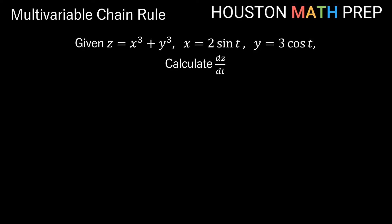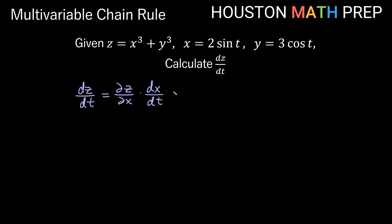Here's a good first example. We're given z equals x cubed plus y cubed, with x equal to 2 sin(t) and y equal to 3 cos(t). We calculate dz/dt. Our ordinary derivative dz/dt equals the partial derivative of z with respect to x times the ordinary derivative of x with respect to t, plus the partial derivative of z with respect to y times the ordinary derivative of y with respect to t. Since z has more than one variable, its derivatives are partial; since x and y each have one variable, their derivatives are ordinary.